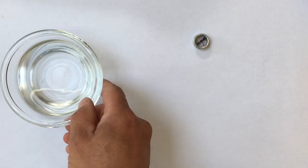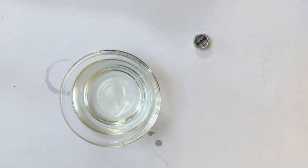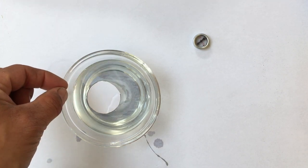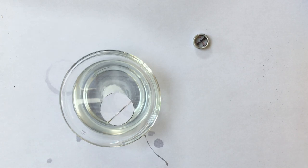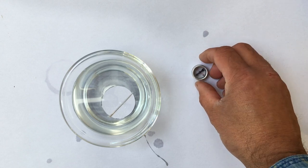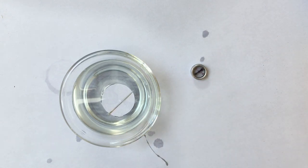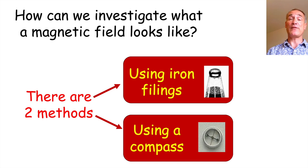To reduce surface tension and stop the needle being dragged to the edge of your bowl, just add a little bit of washing up liquid and stir that round. Now place a circle of paper on the water and then place your needle on top of the paper so it doesn't sink, and you'll see that it turns round and lines up along the magnetic field of the earth — just the same way that the compass in the corner is. So that's how you make a compass at home.